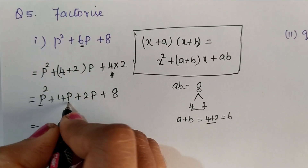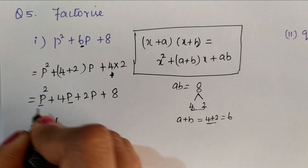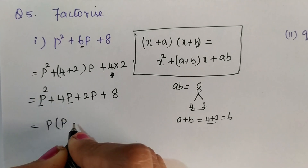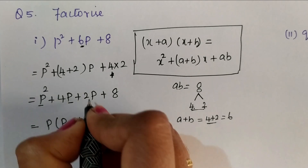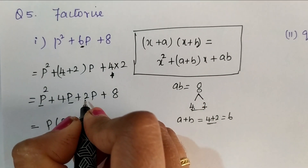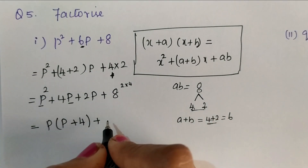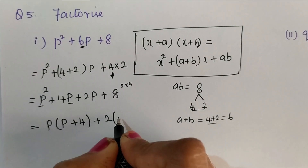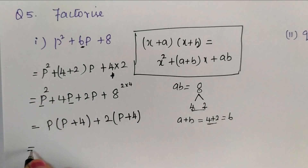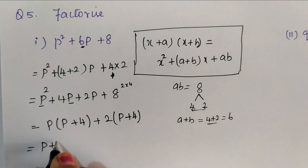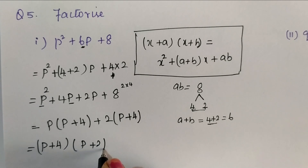Now here we have p as a common term, so I am taking p out. Remaining I have p plus 4. Here we have 2 and 8, and 8 we can write as 2 into 4, so I am taking 2 out. Remaining I have p plus 4. So p plus 4 is common in both terms. Taking it out, remaining I have p plus 2.